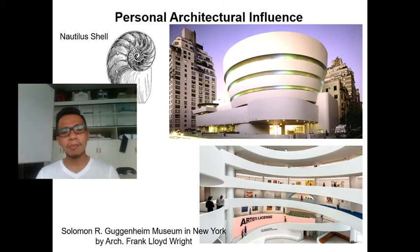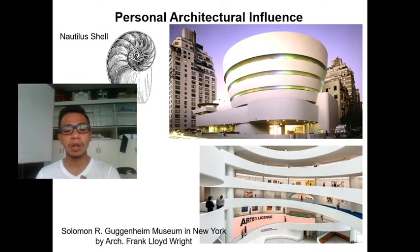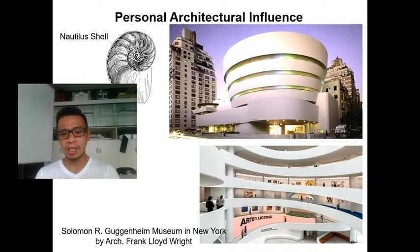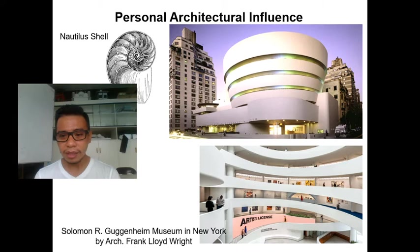Going back to organic form: Frank Lloyd Wright derived the design of the Solomon R. Guggenheim Museum in New York from the organic shape of the Nautilus shell. That's different from Gehry's Guggenheim in Bilbao, Spain — this one is in New York, USA. Coming from the concept of the Nautilus shell, the form was derived from there. The design remains timeless even today.